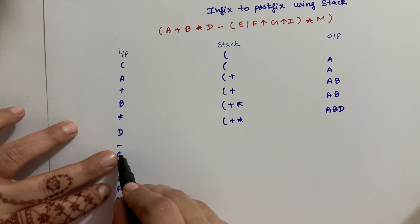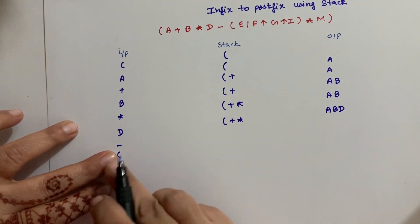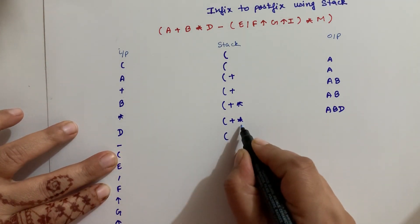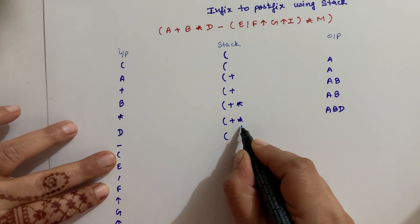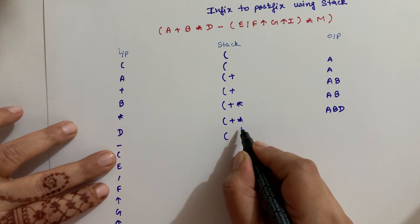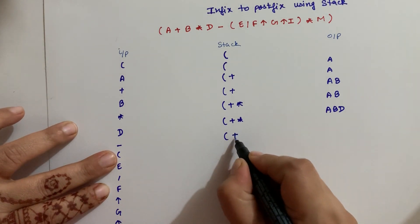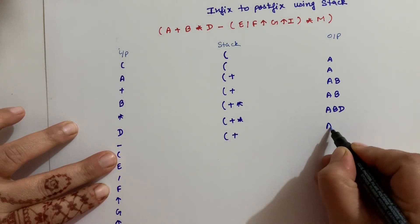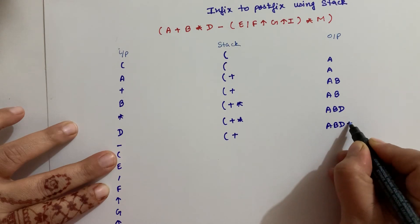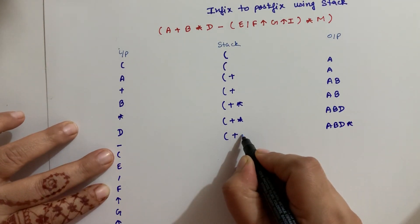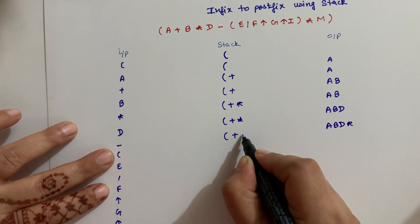Now next is minus. The priority of minus — the operator at the top of the stack is multiplication. Minus's priority is less than multiplication, so multiplication will pop out to the output. Then we check the next top of stack which is plus. Minus's priority is the same as plus, so plus also gets popped out. Then minus goes into the stack.